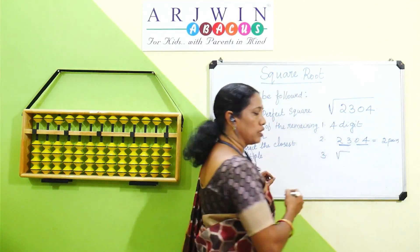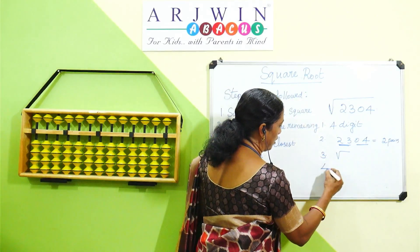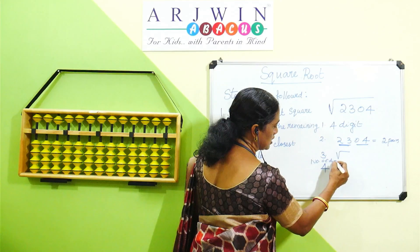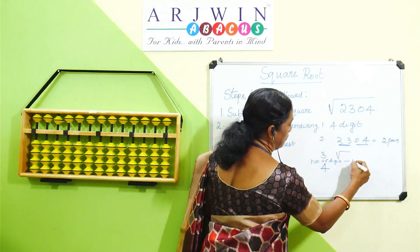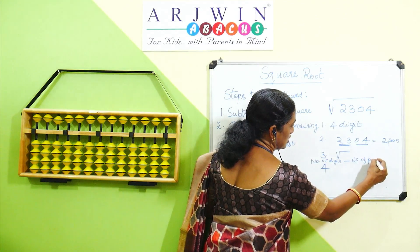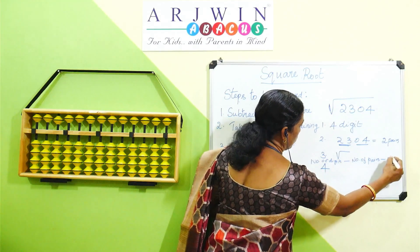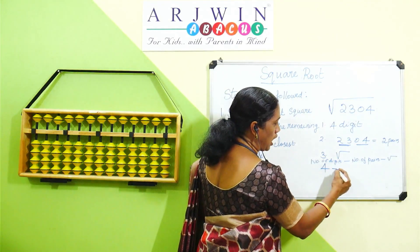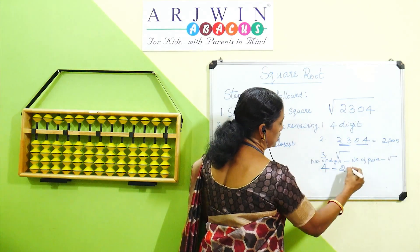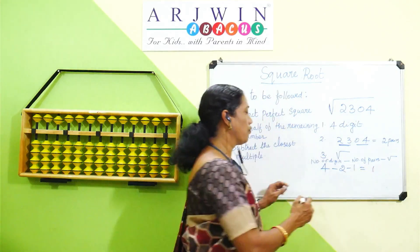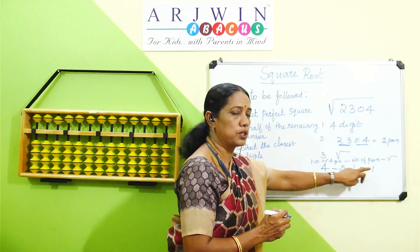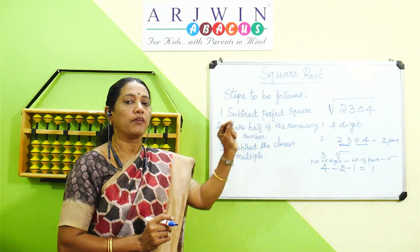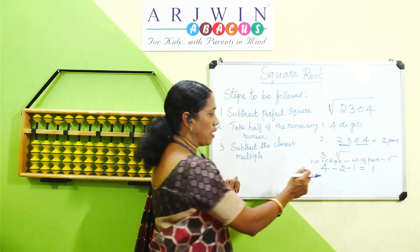Now we use the placement formula for square root. The formula is: number of digits, minus number of pairs, minus 1 for the square root. Number of digits is 4, number of pairs is 2, and square root takes 1. So 4 minus 2 is 2, and 2 minus 1 is 1. We get 1, which means we start placing the number from the 1's place.